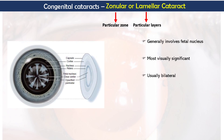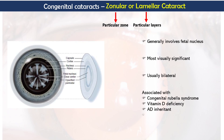The etiology of zonular cataract is associated with congenital rubella syndrome, vitamin D deficiency, autosomal dominant inheritance, hypocalcemia, and hypothyroidism.